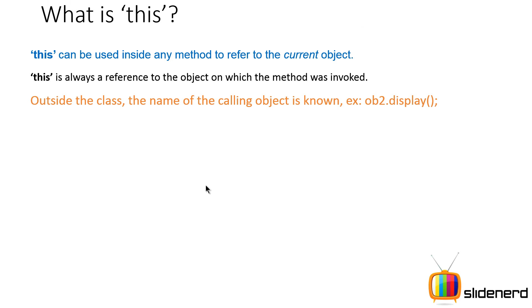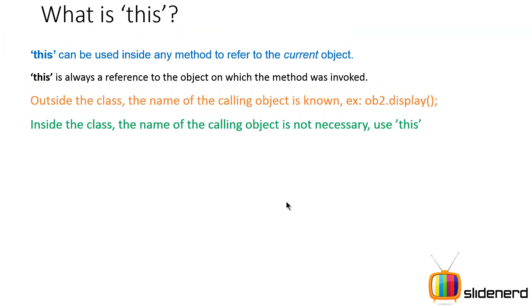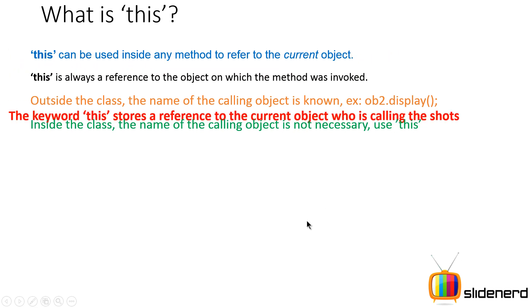For example, outside the class, if you know the name of an object you would say 'ob2.display' to call the display method on object ob2. But inside the class you don't have to use the name ob2 — you can use the 'this' keyword to refer to it instead.